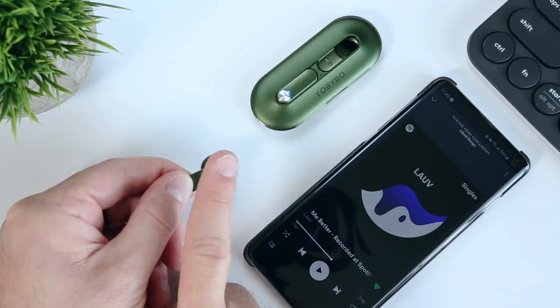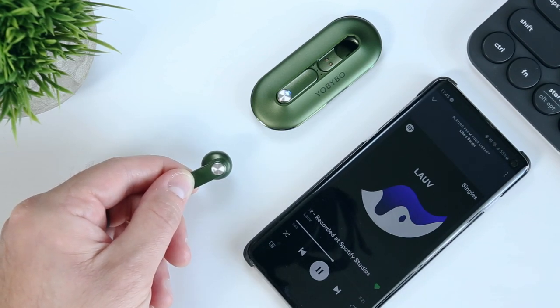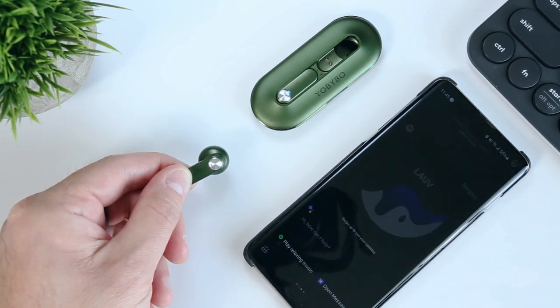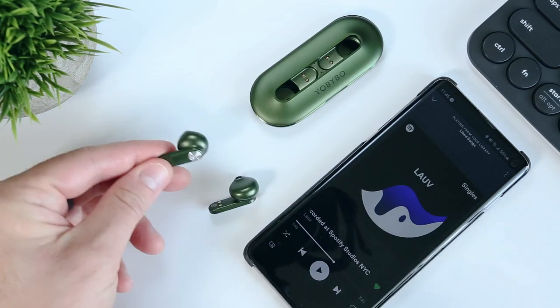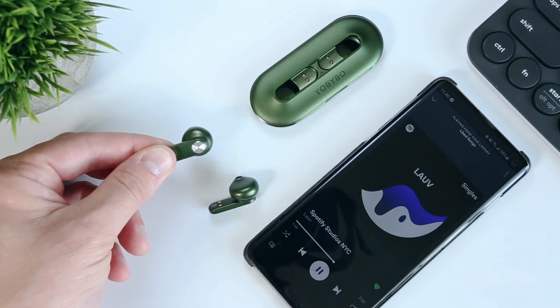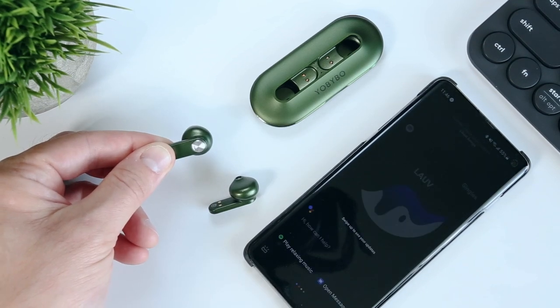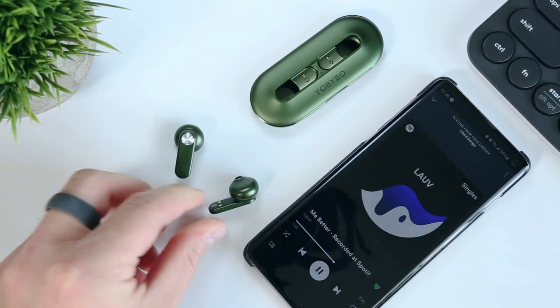But you'll only have access to play pause and voice assistant summoning via double or triple taps in mono mode, and in stereo mode the controls are divided so that the left earbud controls play pause and voice assistant summoning, while the right earbud controls track skipping.